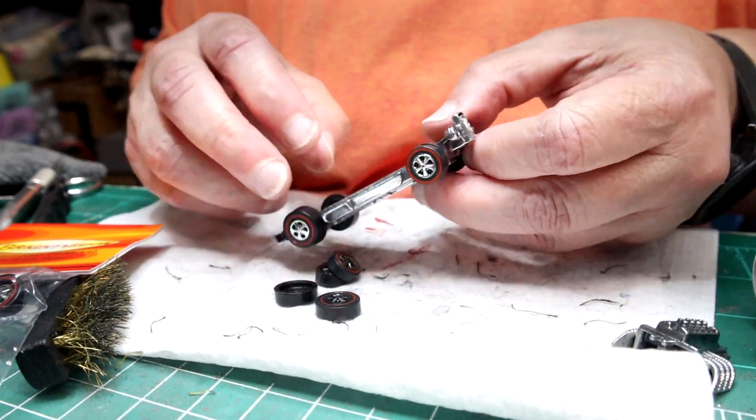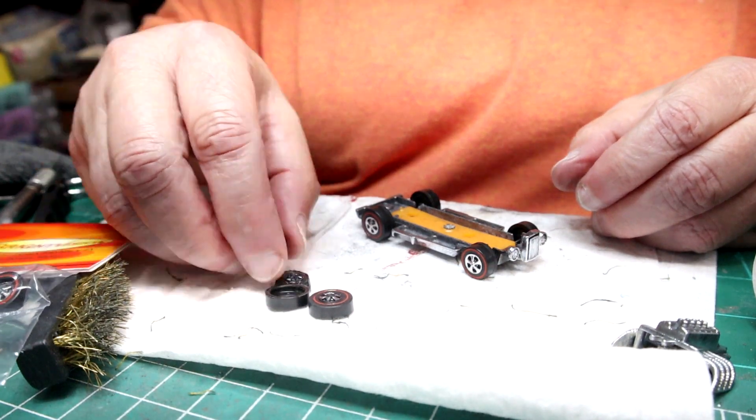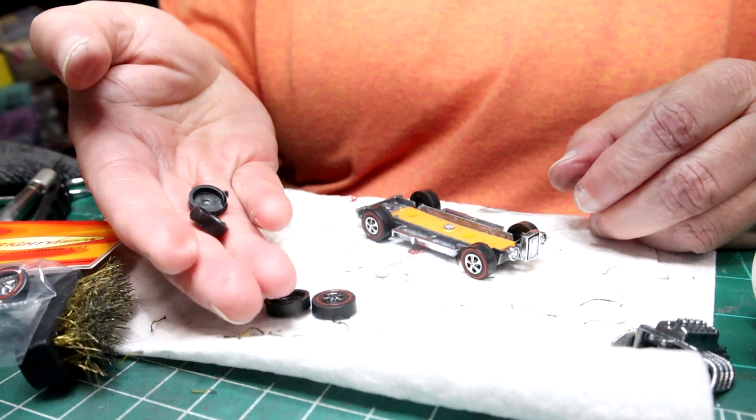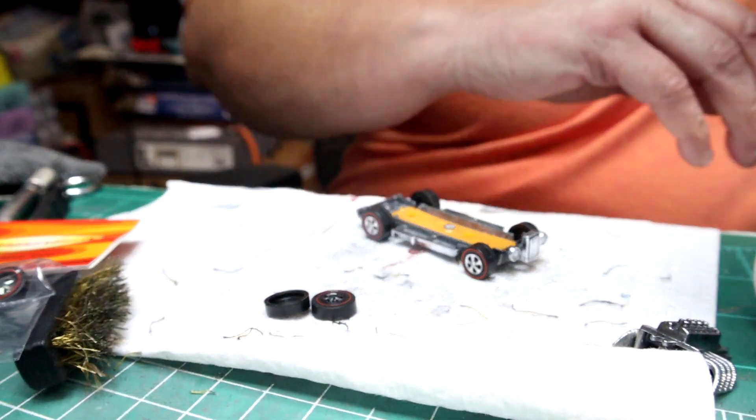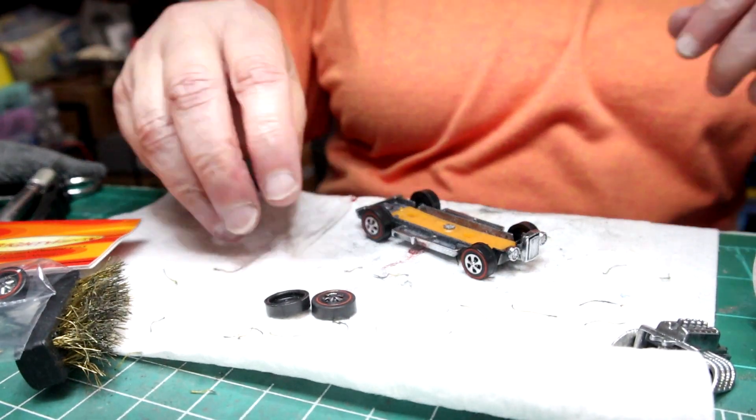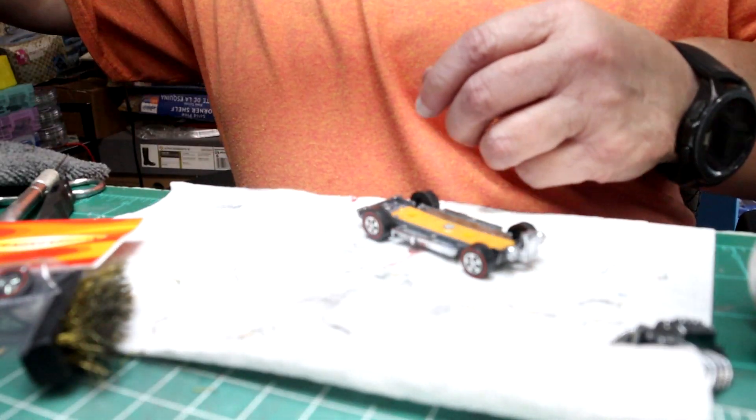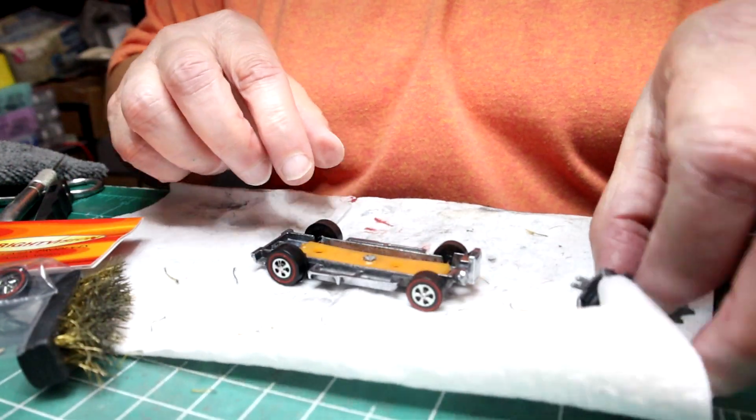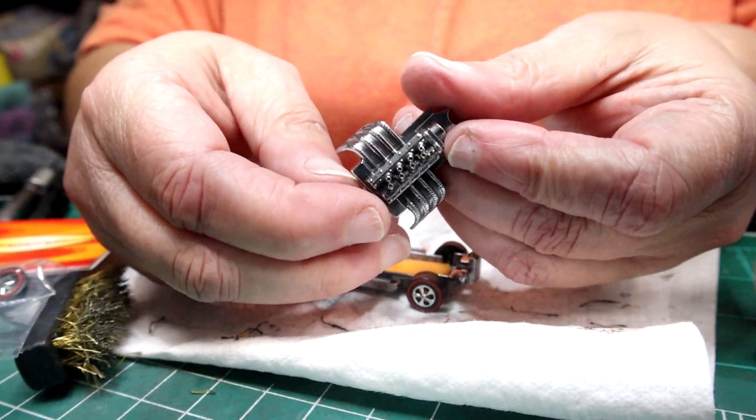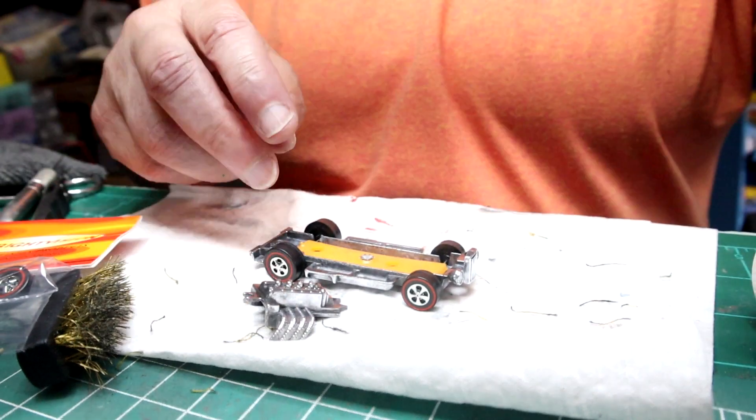You can see that base polished up real nice. I'll put some of that Renaissance wax on both of those just to keep it from turning black. I usually save those older wheels if they're not all busted up and everything. The two front ones weren't worth saving.